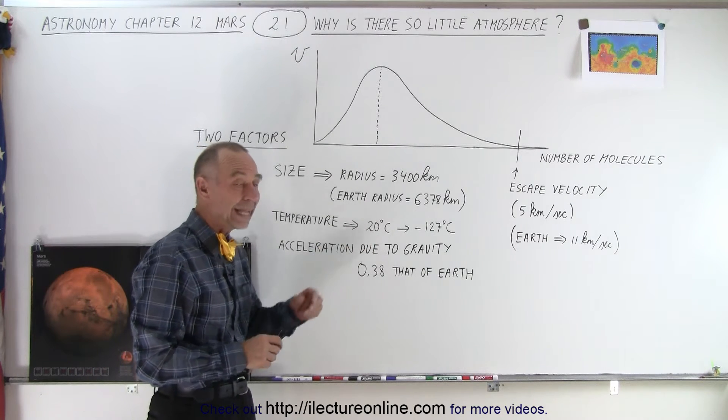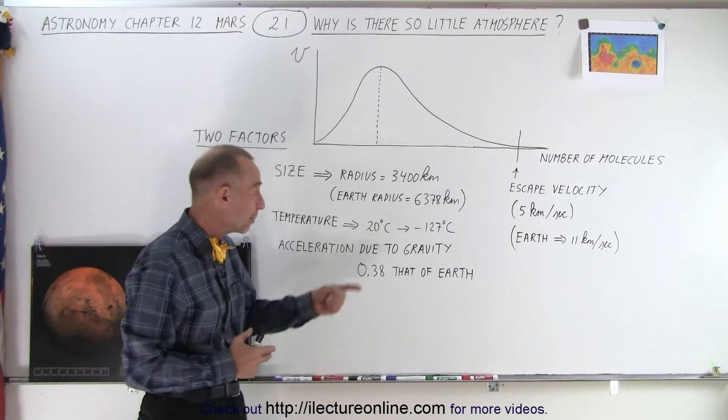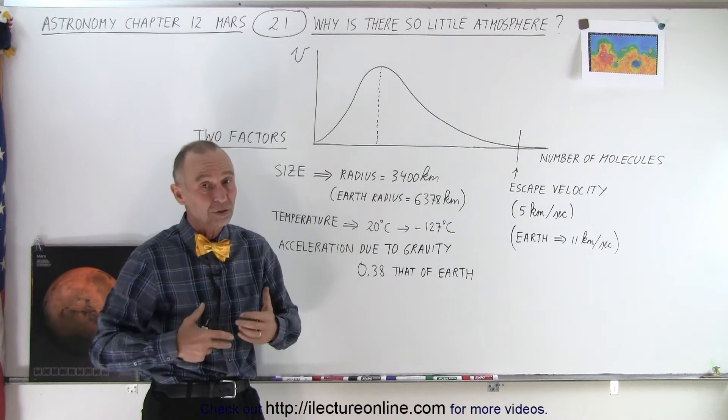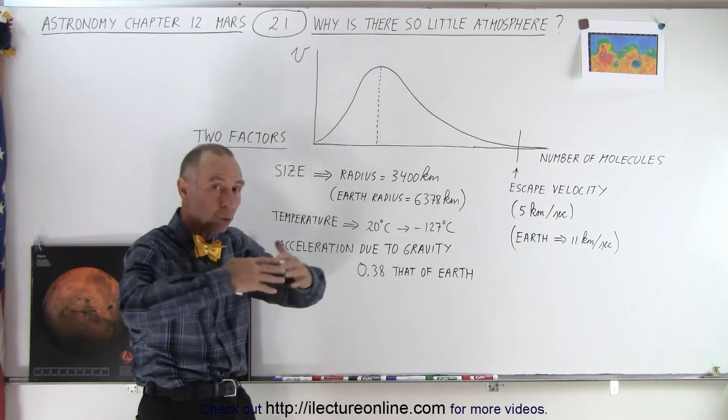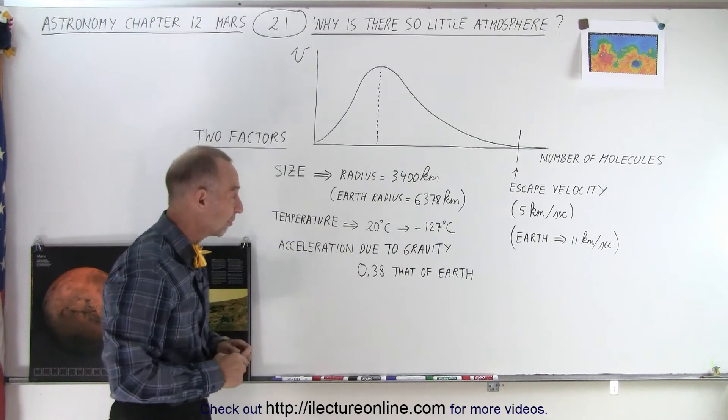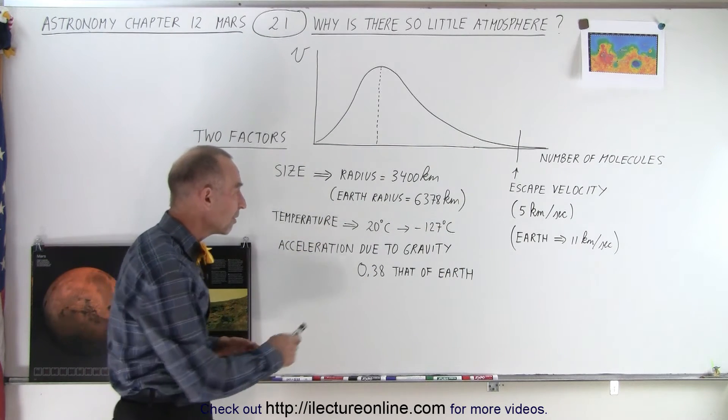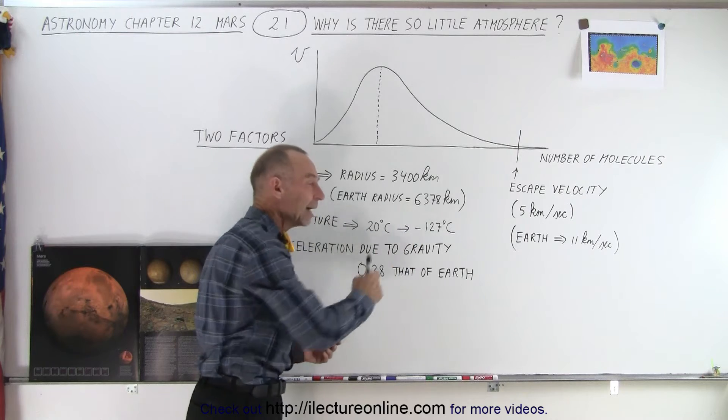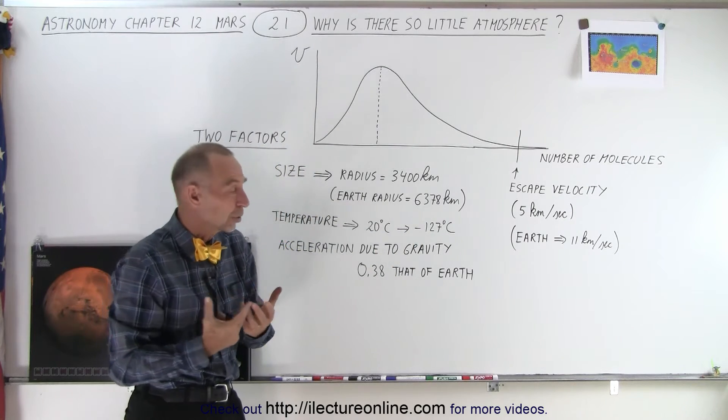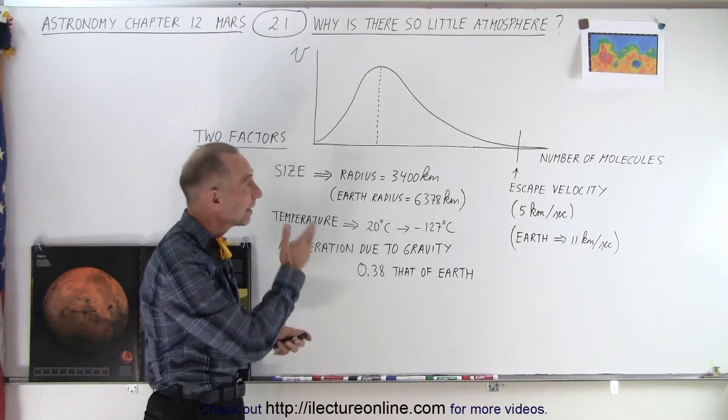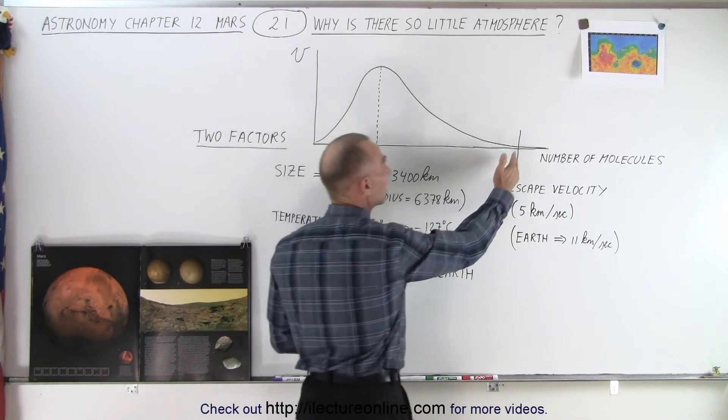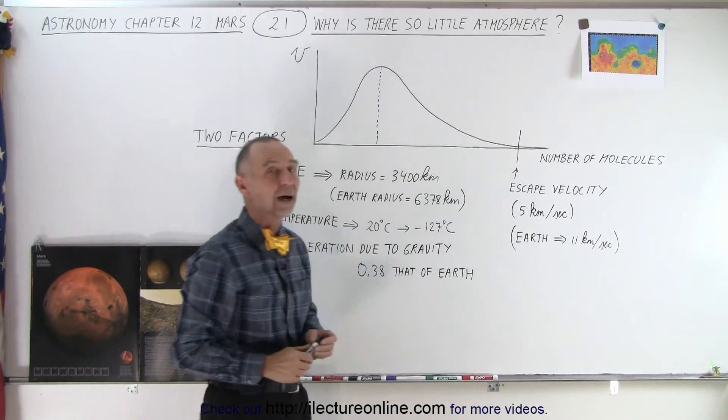But the temperatures during the daytime in the summer near the equator can be as high as 20 degrees centigrade, which is quite a bit warmer than you'll find in some of the colder places in our solar system further away from the sun. So the temperatures are still sufficiently high to give enough energy to the molecules, especially on warmer days, that molecules could exceed the escape velocity of Mars.